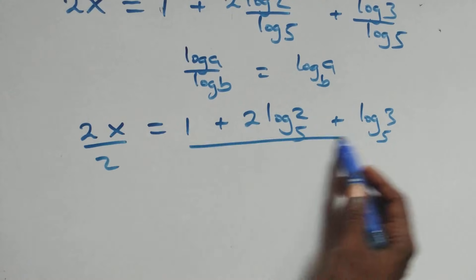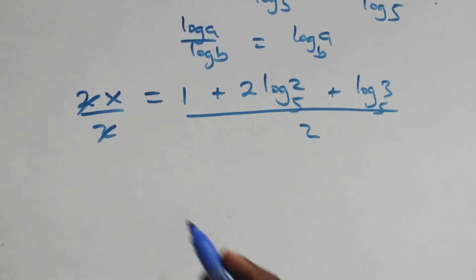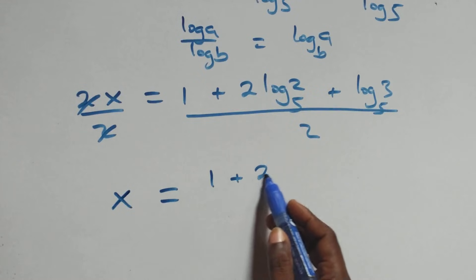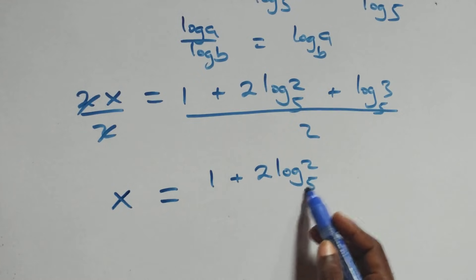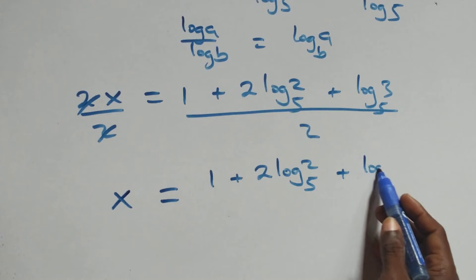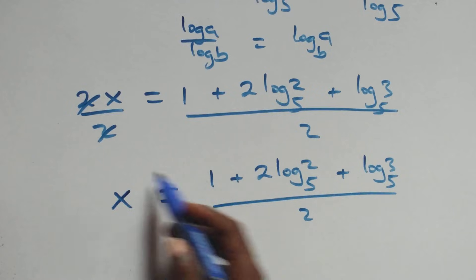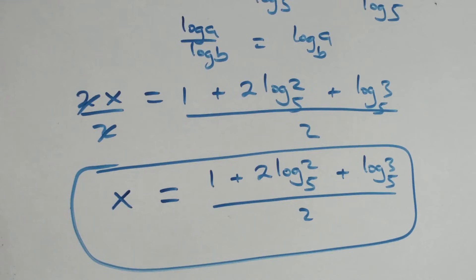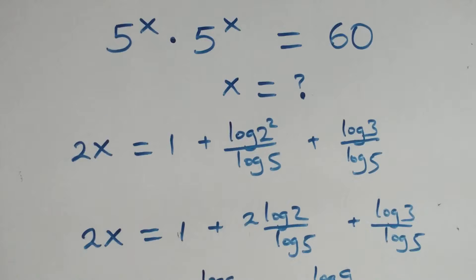Now, we have 2x equals to 1 plus 2·log₅2 plus log₅3 all over 2. Now, we have x equals to (1 plus 2·log₅2 plus log₅3) all over 2.